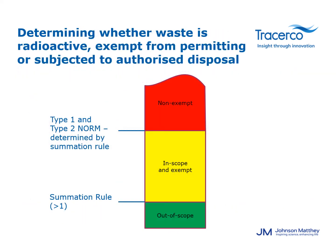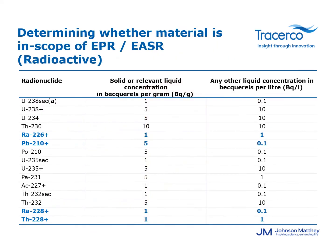There are three categories of waste which may be determined using radiochemical analysis results and values included in our environmental legislation. These are: out of scope — material or waste which is not considered to be radioactive in the legal sense; in scope but exempt — material or waste which may be disposed of without a permit; and finally in scope and non-exempt — material or waste which will be subject to authorised or permitted disposal. A simple summation rule is used to calculate whether the waste is out of scope, and the radionuclides highlighted in blue in the table are those used for the summation.